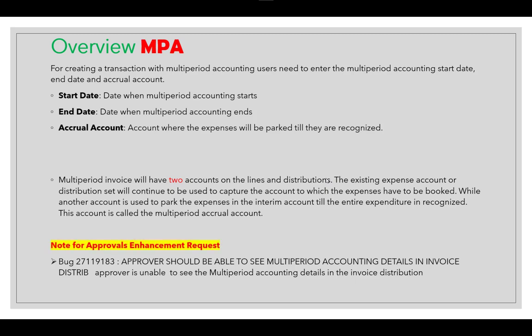Regarding approvals for MBA: if you enable approval for a payables invoice and the user creates an MBA invoice and sends it for approval, the approver is unable to see the multi-period accounting details in the invoice distribution. This is currently a bug and may be resolved soon. You can track this on the Oracle Community or via an Oracle SR.